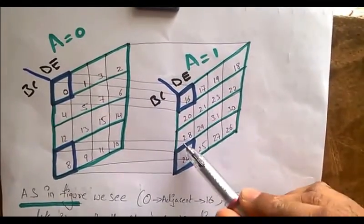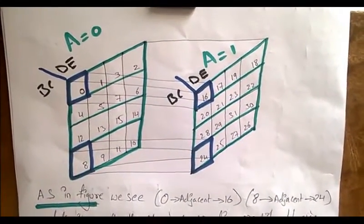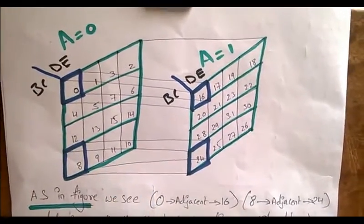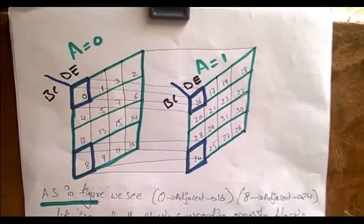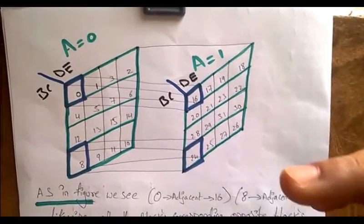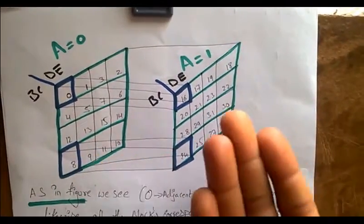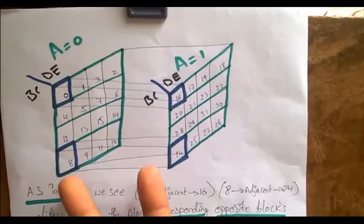Now the logic is: in K-map analysis we do looping or pairing to adjacent blocks, right? So in the 5-variable K-map the same logic applies, but we had considered that the two K-maps are on opposite faces of a cube.